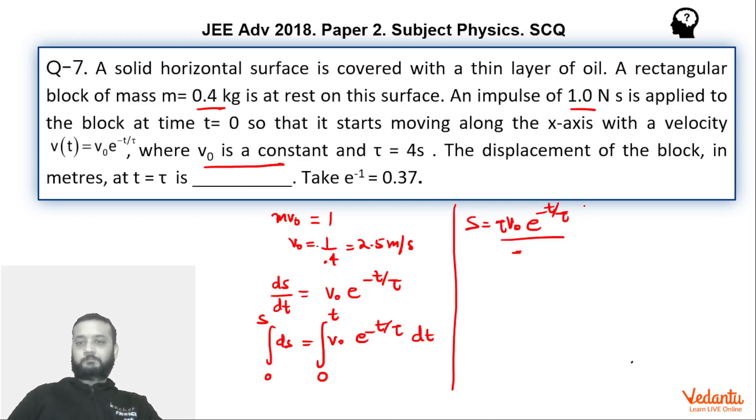So this becomes s equals v0 will come outside, e to the power minus t by tau divided by minus 1 by tau. So tau will go in the numerator, zero to t. This becomes minus tau times v0 times e to the power minus t by tau minus e to the power zero which is 1.